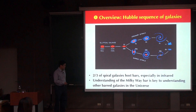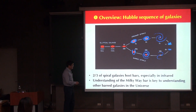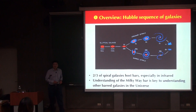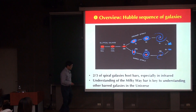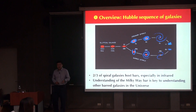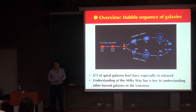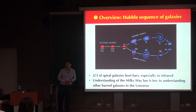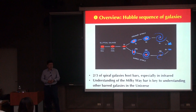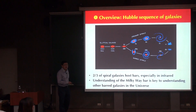Two-thirds of spiral galaxies may be barred. As you will see later in my talk, the Milky Way hosts such a bar. Because of our proximity to the stars in the Milky Way, we are in a much better position to understand the structure at the center. If we can understand the gas and stellar processes in the Milky Way bar, we'll be in a much better position to understand many bar galaxies in the universe.